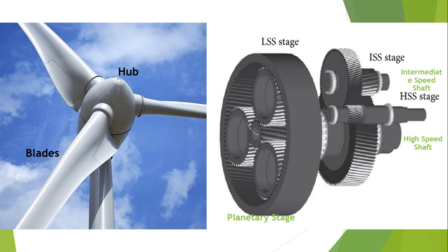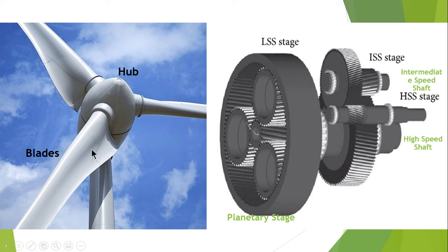Hello and Assalamualaikum, this is lecture number 24. In this part of the lecture I will be discussing a typical gearbox of a wind turbine. This is the outermost look that we usually see in a wind turbine. This is the hub, and the hub is connected to the blades. This overall part is called the rotor — these are the rotor blades.